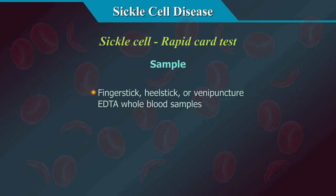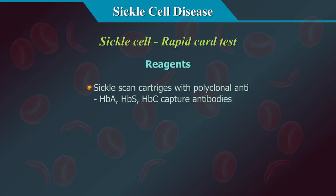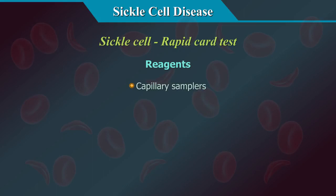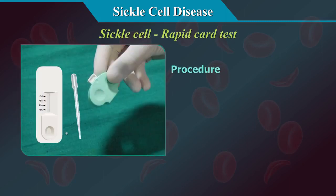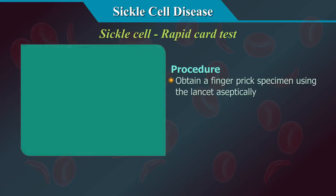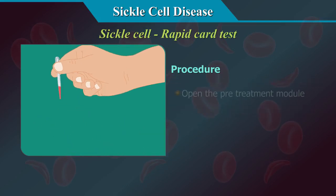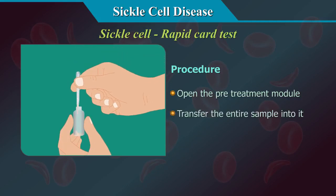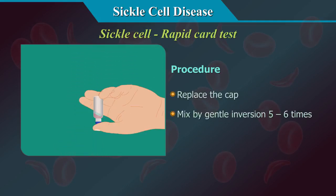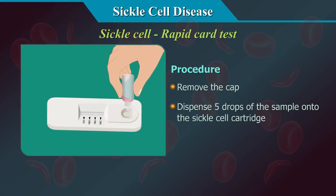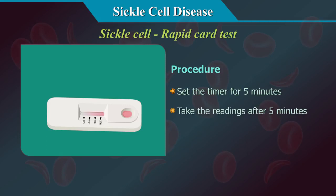Sample types include finger stick, heel stick, or venipuncture EDTA whole blood. Reagents include sickle scan cartridges with polyclonal anti-HBA, HBS, and HBC capture antibodies; pre-treatment modules with buffer; capillary samplers; lancets; and timers. Procedure: open the pouch when ready to use; obtain a finger prick specimen using the lancet aseptically; take 5 µl of blood using the capillary sampler; open the pre-treatment module and transfer the entire sample into it; replace the cap and mix by gentle inversion 5–6 times; remove the cap and dispense 5 drops of the sample onto the sickle cell cartridge; set the timer for 5 minutes and take readings after 5 minutes.